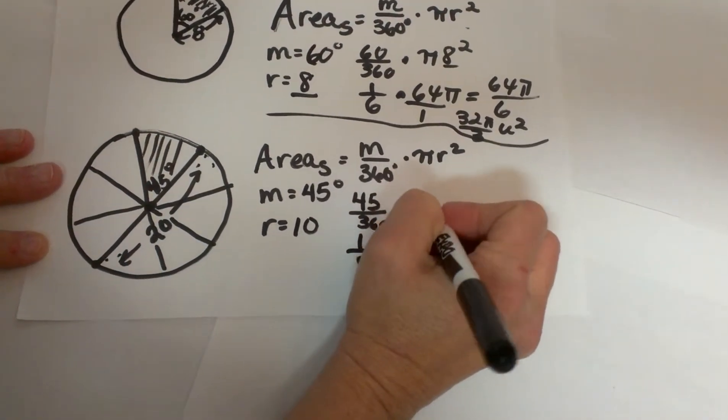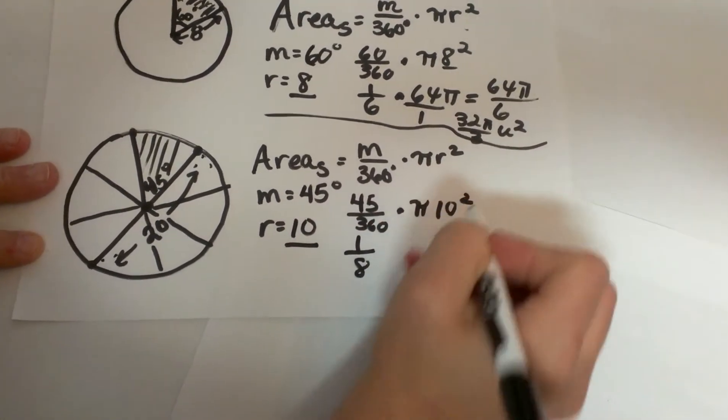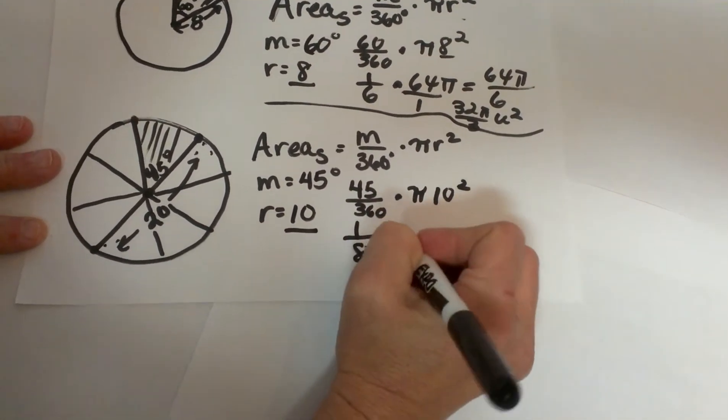So times pi, my radius I am plugging in is 10, so 10 squared, 10 squared is 100 pi.